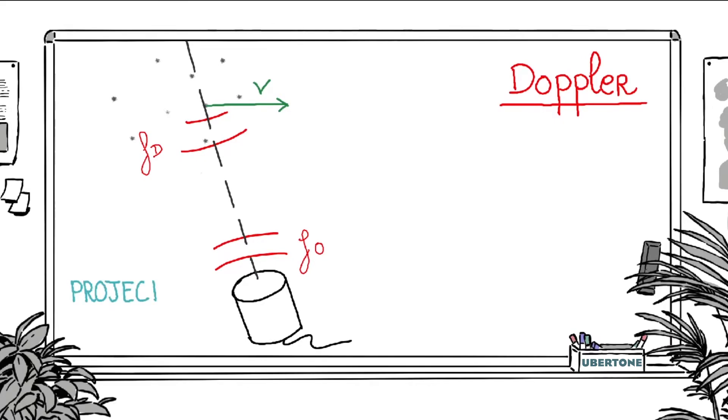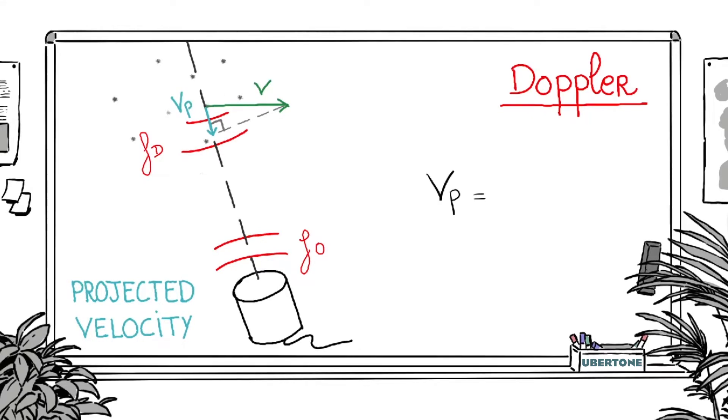Thus, the Doppler frequency is representative of one component of the velocity vector, namely the projection on the transducer axis, which is equal to the sound speed times the Doppler frequency divided by twice the emission frequency.